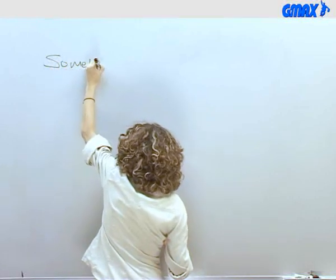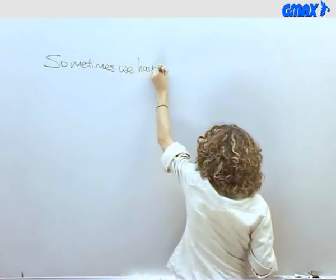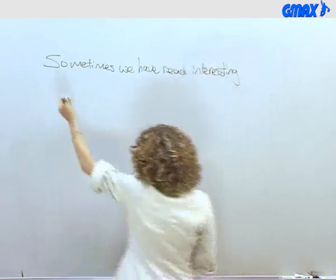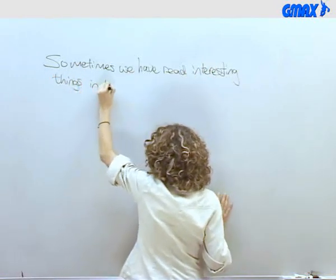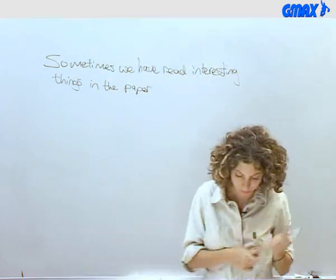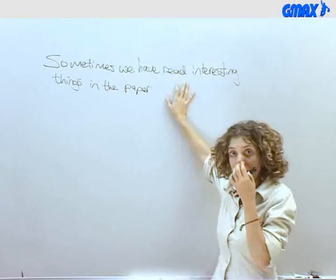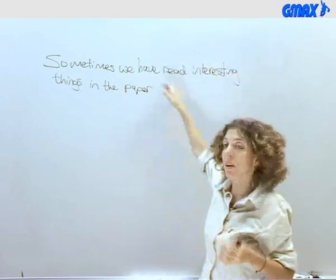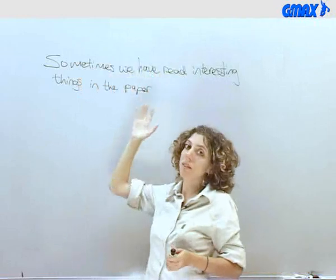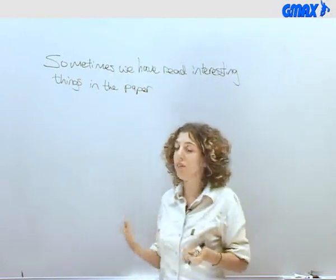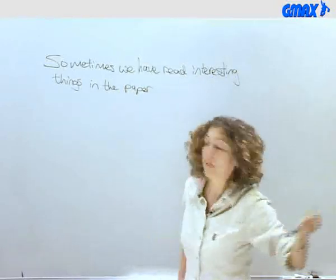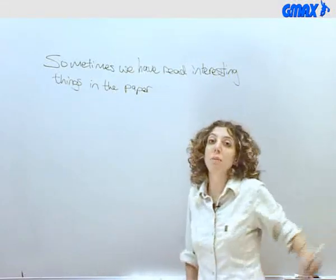Sometimes we've read interesting things in the paper. Sometimes we have read interesting things as opposed to other people having read them. What is 'sometimes' referring to — sometimes it's us, or sometimes we read? You can see that very often when we use certain words there is ambiguity about who's referring to what. So you could say 'Sometimes we have read and sometimes they have read,' or 'Sometimes we have read and sometimes we have watched it on TV.'